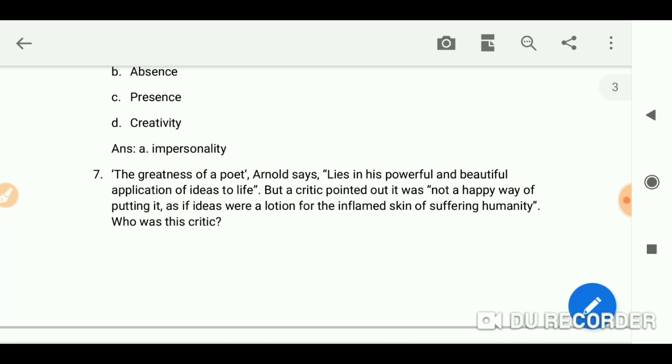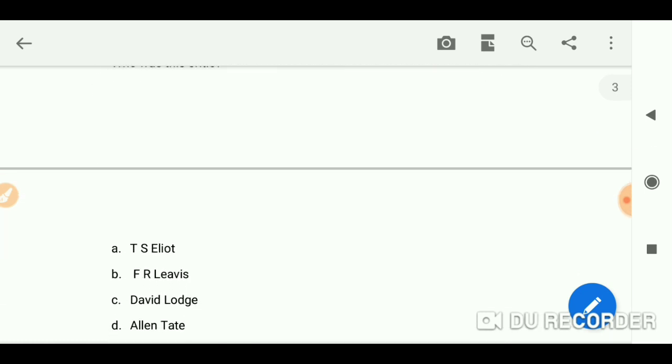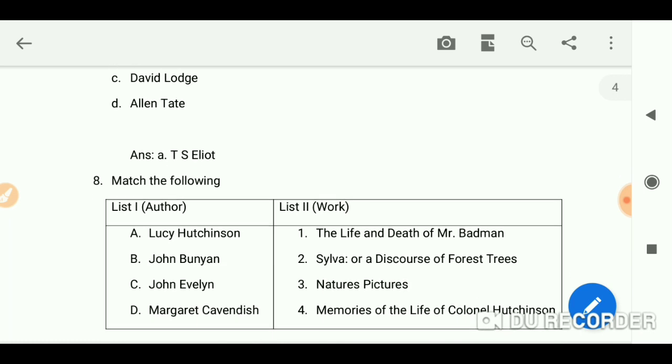The greatness of a poet, Arnold says, lies in his powerful and beautiful application of ideas to life. But a critic pointed out it was not a happy way of putting it, as if ideas were a lotion for the inflamed skin of suffering humanity. Who was this critic? Your options are T.S. Eliot, F.R. Leavis, David Lodge, and Alan Tate. T.S. Eliot is the answer.